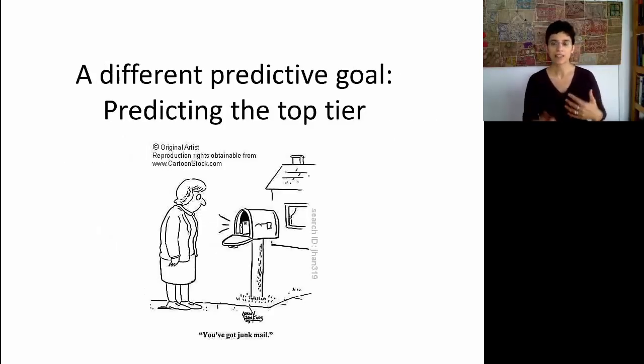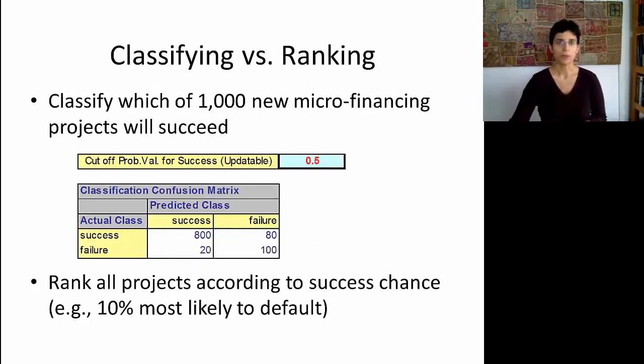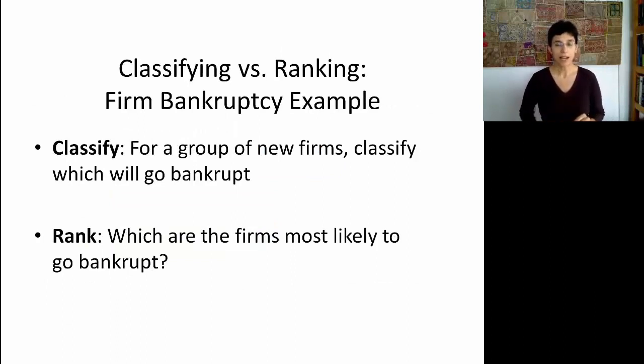The second issue we'll look at is comparing the task of classifying with the task of ranking, or predicting the top tier. What's the difference between the two? Well, let's consider this little example that we had before. Let's say we have a thousand new microfinancing projects, and we're trying to classify for each and every one of them which one will succeed and which one will fail. This confusion matrix, if it's based indeed on a holdout set, would give us a good idea on the performance on future data. However, what if I'm interested in something else? I want to detect the 10% of projects that are most likely to fail. In that case, this confusion matrix is not going to be helpful at all. And sometimes, ranking the projects and finding the ones that are most likely to fail, or succeed, is really what we're after.